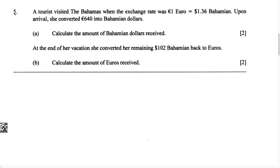In this video, we're going to learn how to convert from one currency to another by using an exchange rate. This question says a tourist visited the Bahamas when the exchange rate was 1 euro equals 1 dollar and 36 cents Bahamian. Upon arrival, she converted 640 euro dollars into Bahamian dollars. Part A: calculate the amount of Bahamian dollars received.